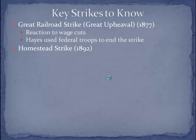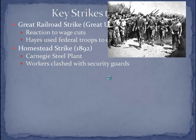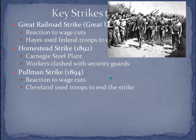The Homestead Strike came fifteen years later in 1892, at Andrew Carnegie's steel plant. Workers clashed with security guards and eventually police as well — again the government siding against workers. The Pullman Strike for the Pullman Palace Cars happened in 1894, again a reaction to wage cuts. President Cleveland used federal troops to end the strike, saying it interfered with the mail system.